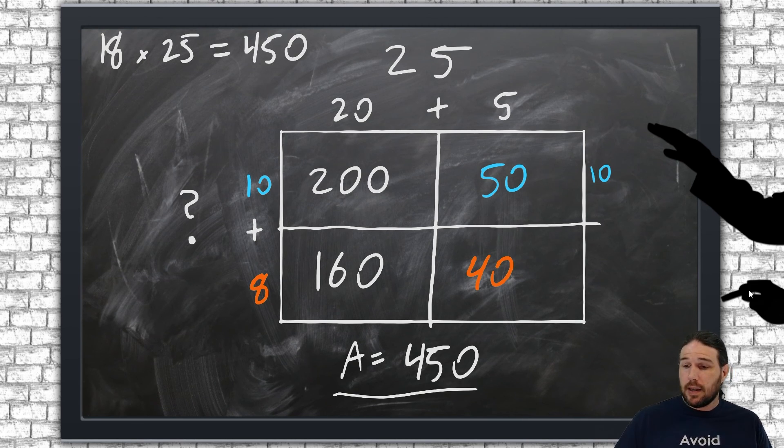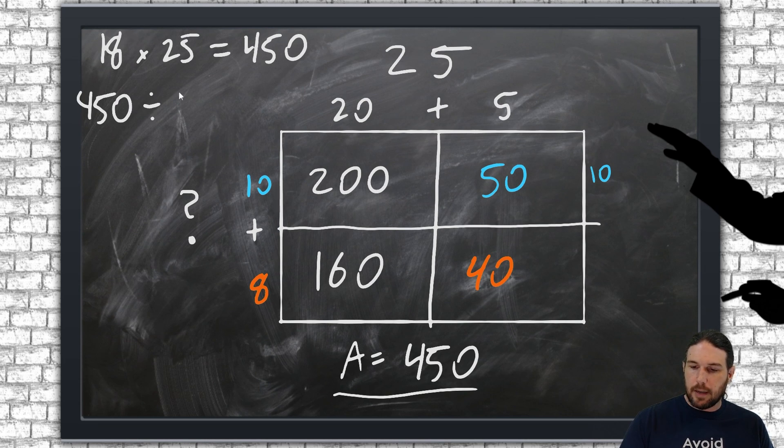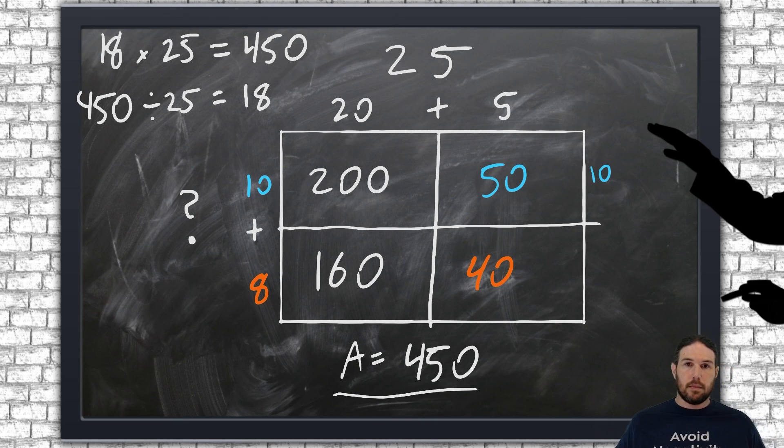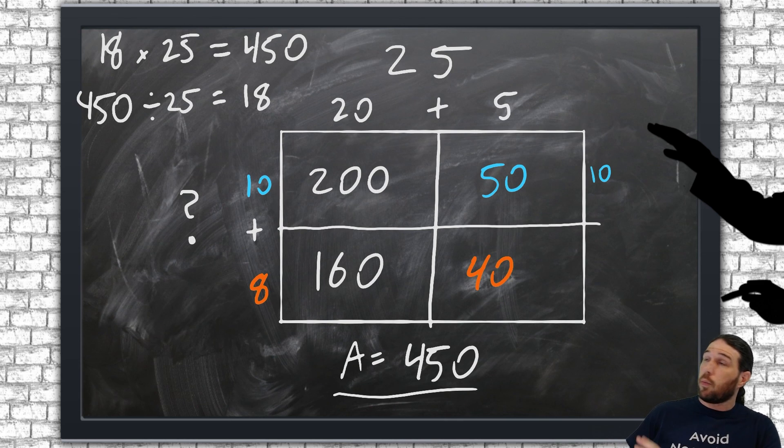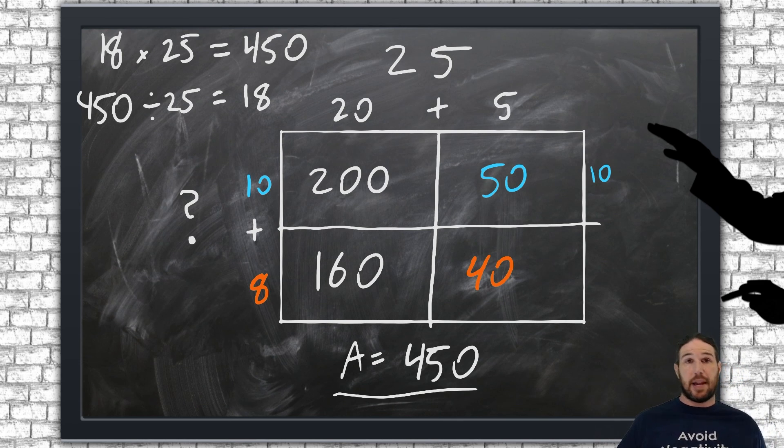We could also instead say that we were doing 450 divided by 25 equals 18. They both mean the same thing. Either way, we started with the width and the area, and we worked backwards from there.